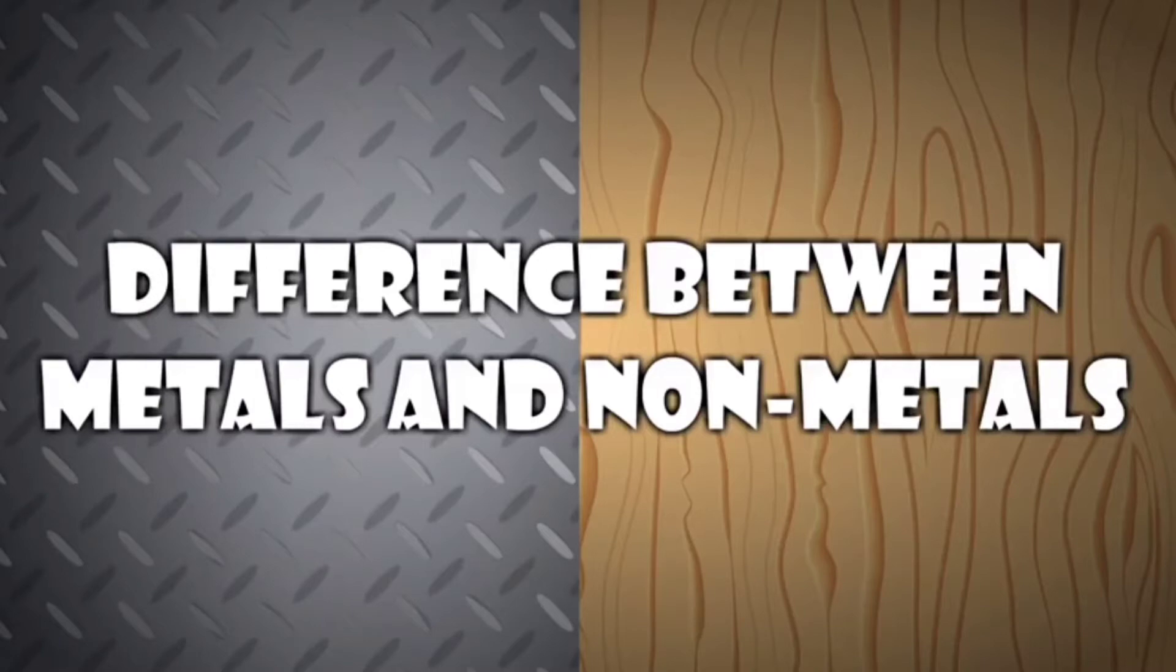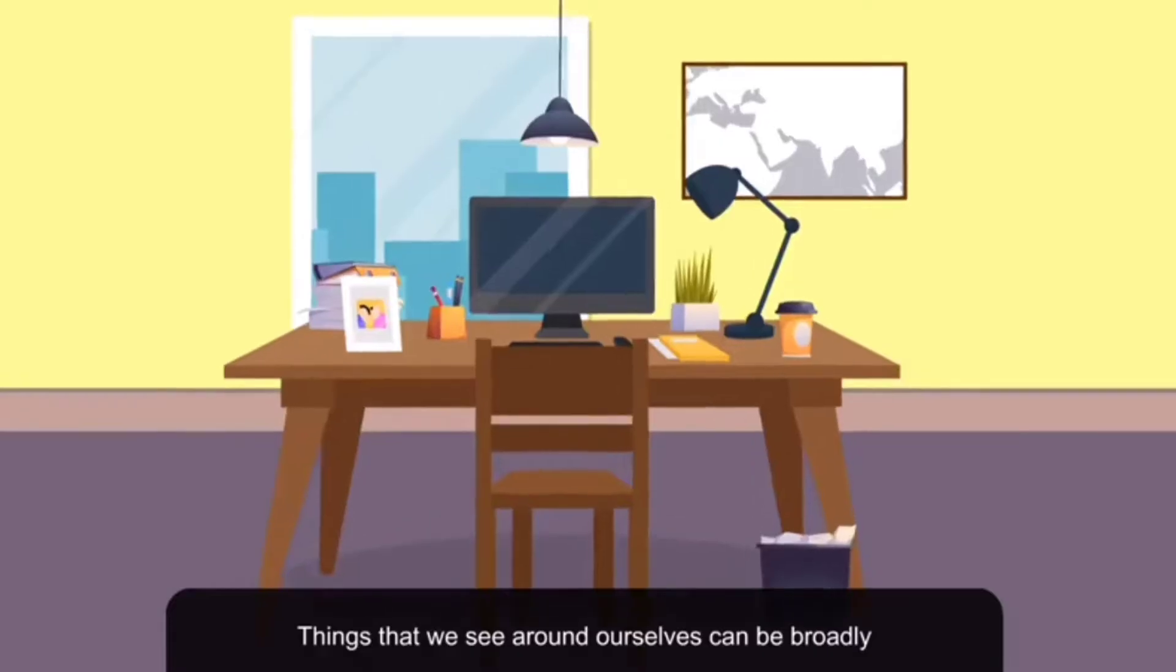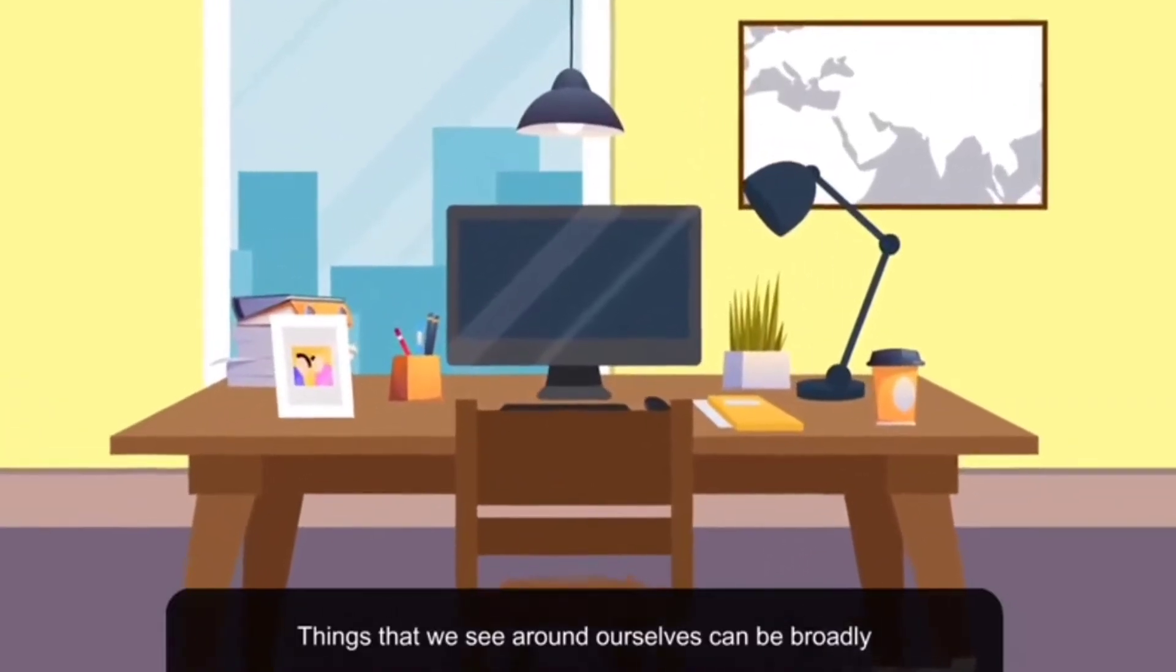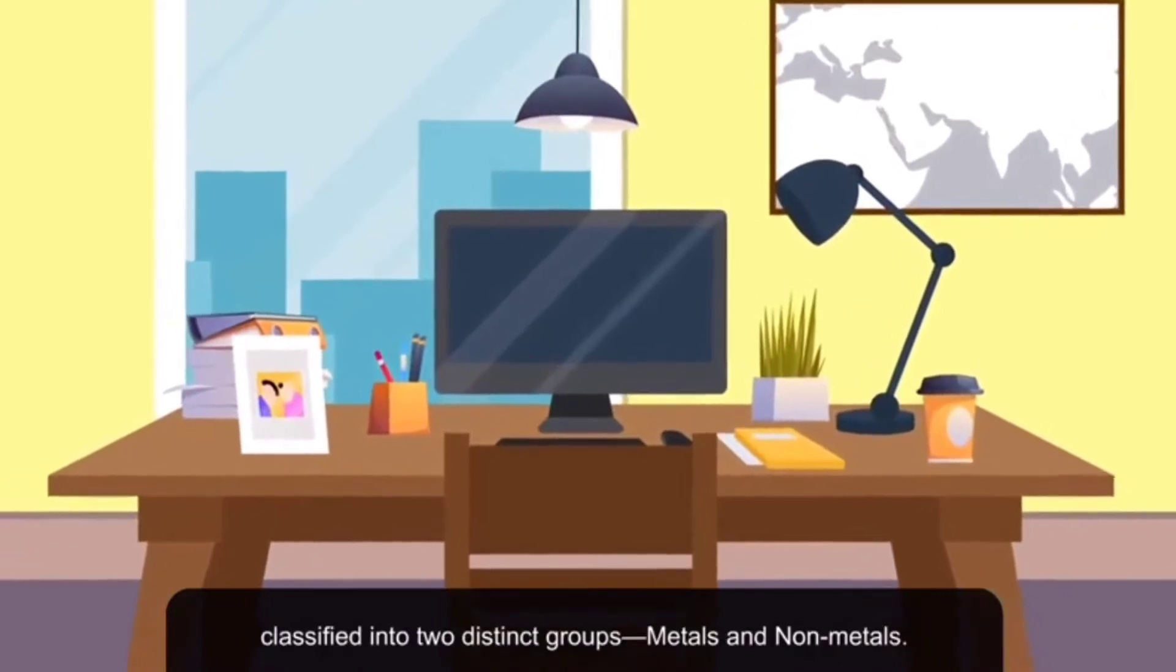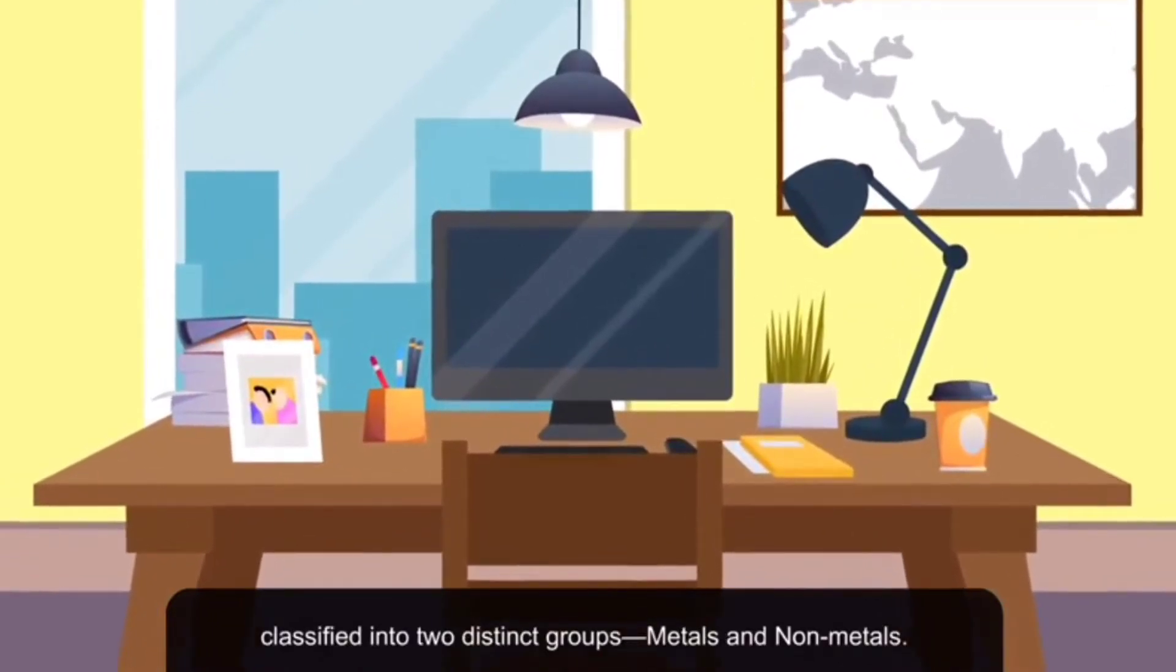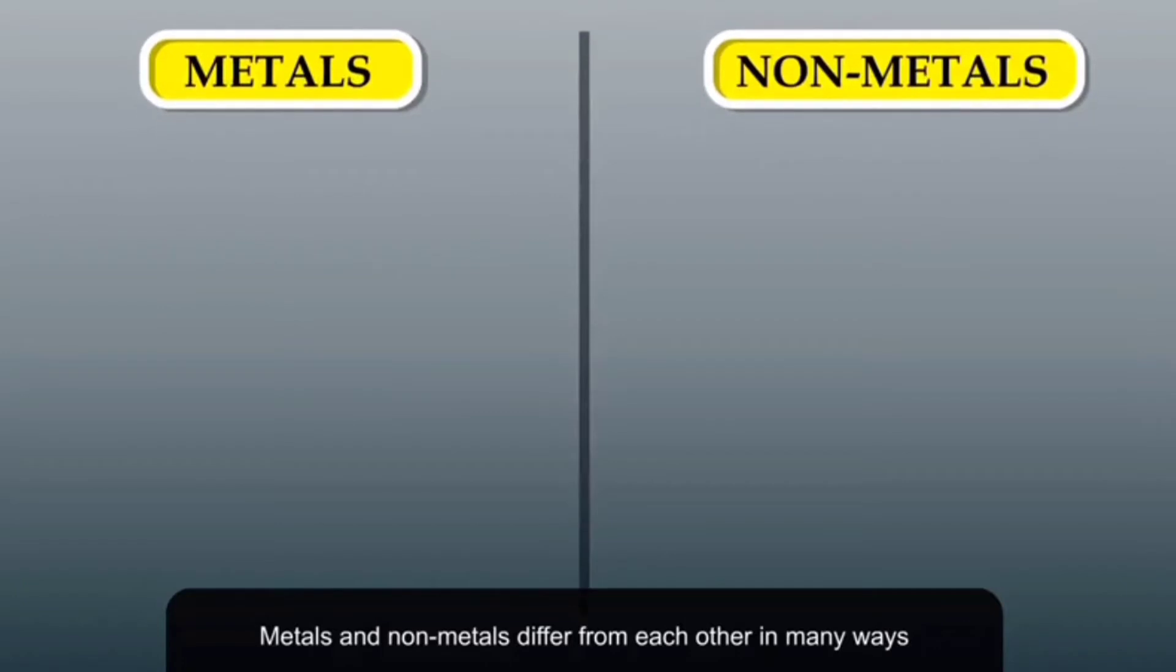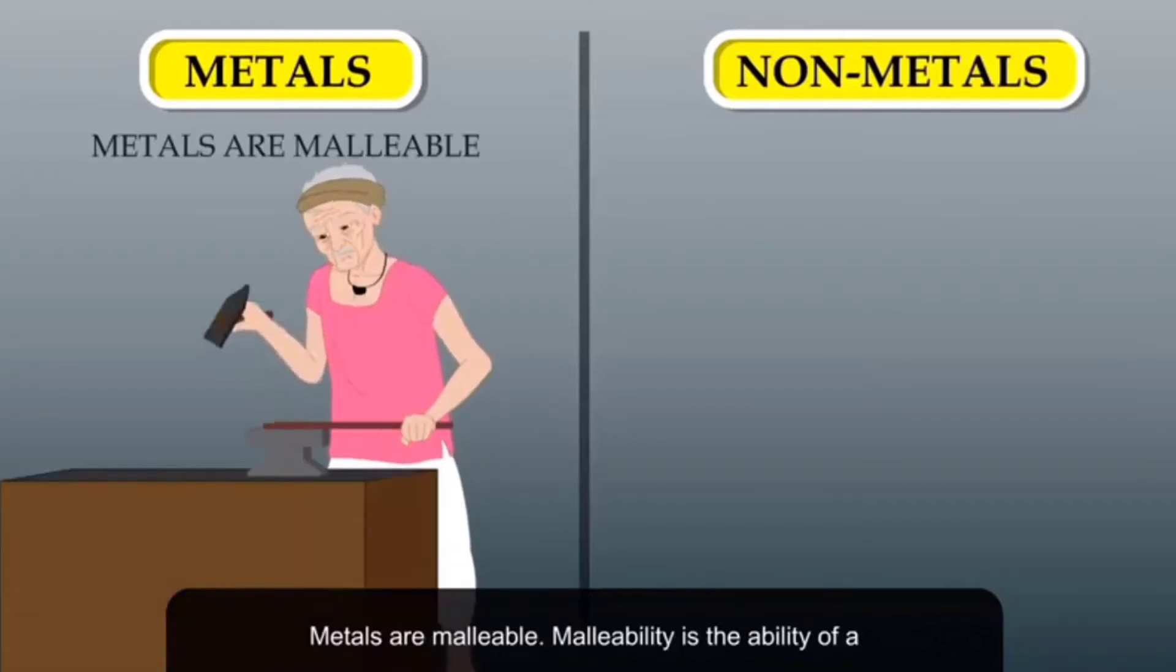Things that we see around ourselves can be broadly classified into two distinct groups: metals and non-metals. Metals and non-metals differ from each other in many ways. Let us find out how.